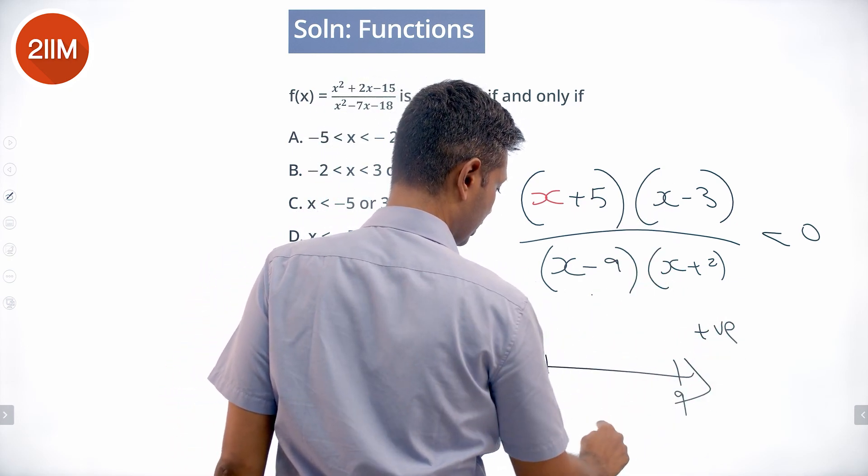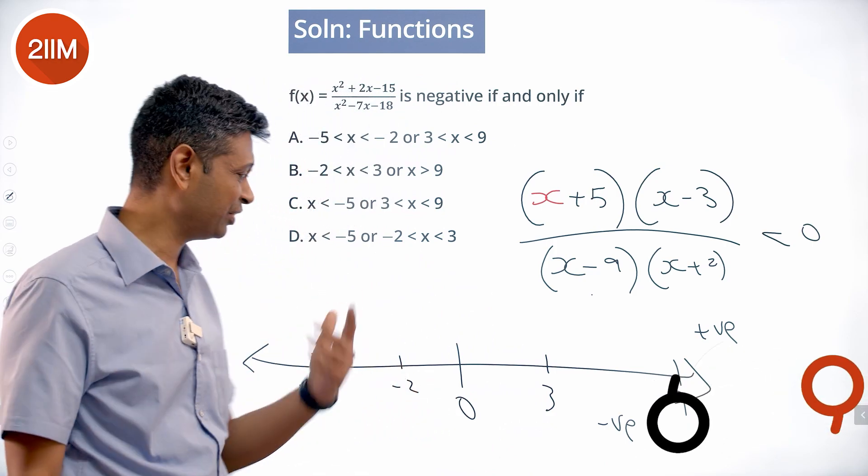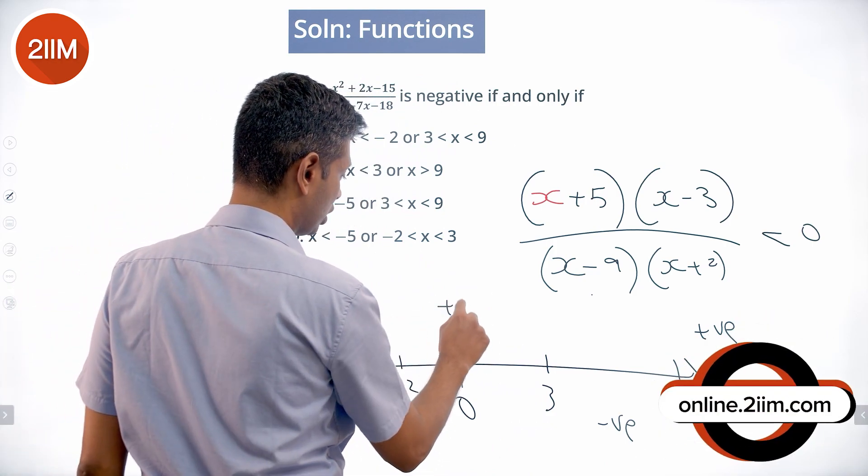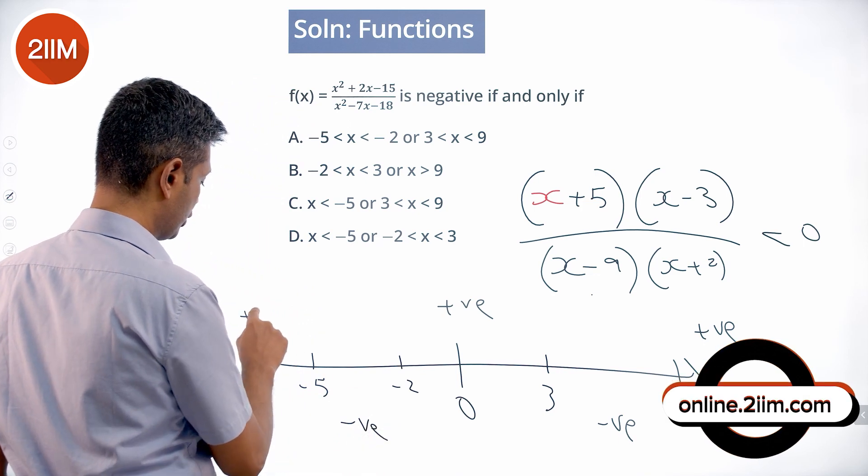Continuing this analysis: in the next range it will be positive, then negative, then positive again. Once we analyze one range, everything else falls into place.